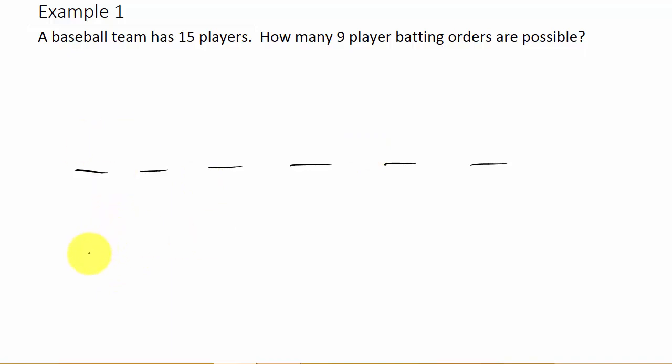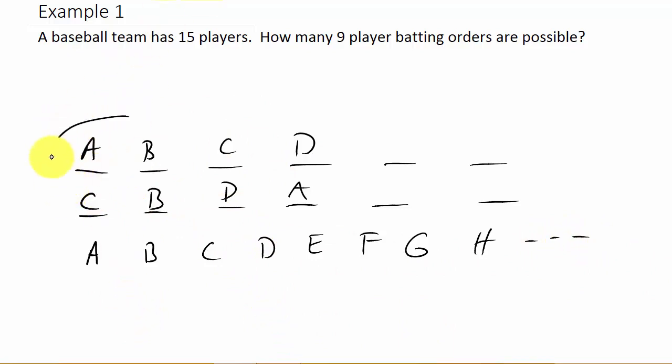Let's look at these spots here. I'm just showing you how the order matters. Say you have player A, B, C, D. Let's just choose four of them right now. So if I choose A, B, C, and D, there's a batting order, that's the first four batters.